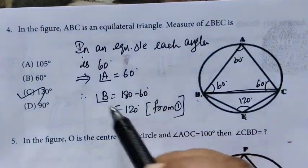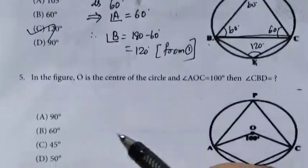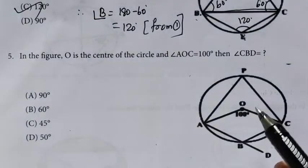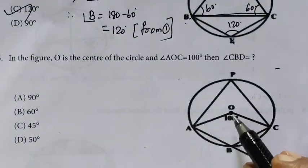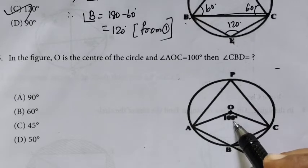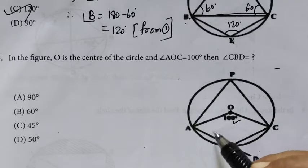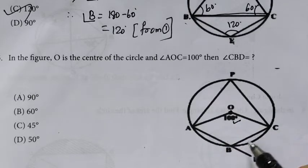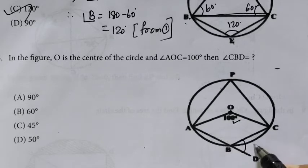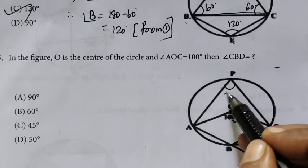The reason is 120. Then the next one. In the figure, O is the center of the circle. AOC is 100 degrees. This is the question mark, and this is 50.